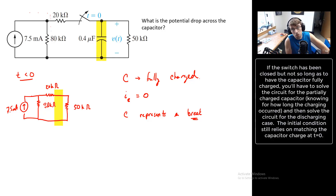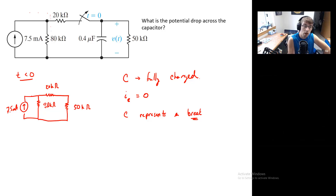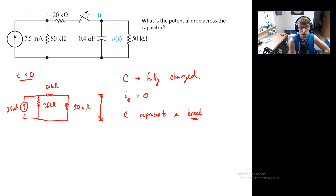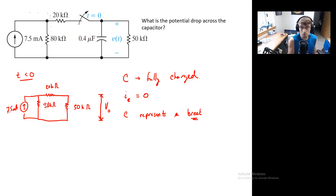This is where our ideas about what capacitors and inductors do at short and long times come in handy. Since the switch has been closed for a long time, you can think of the capacitor as being fully charged, and therefore the current through it equals zero. The capacitor represents a break in the circuit. So I just drew it without anything in there — easy peasy. We want to use this circuit representation to find the potential difference, which is across the 50 kilohm resistor — the same potential drop as across the capacitor. I'll label that V-naught.